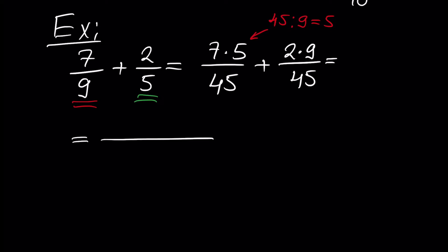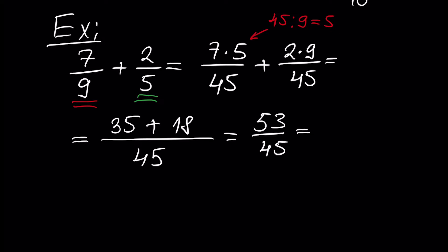And we have 45: 7 times 5 is 35 plus 2 times 9 is 18. The result will be 53 over 45. And we can write our fraction as a mixed number: 1, because 53 divided by 45 is 1 and we have a remainder 8, and 45 will stay the same.